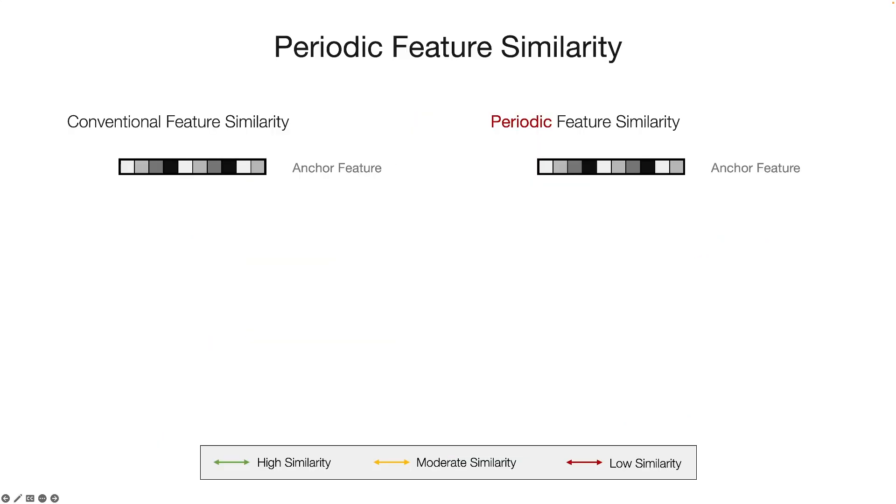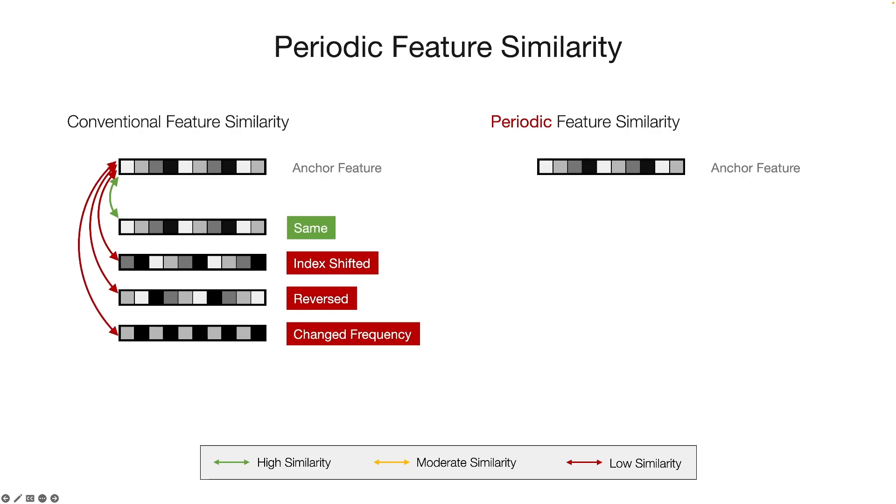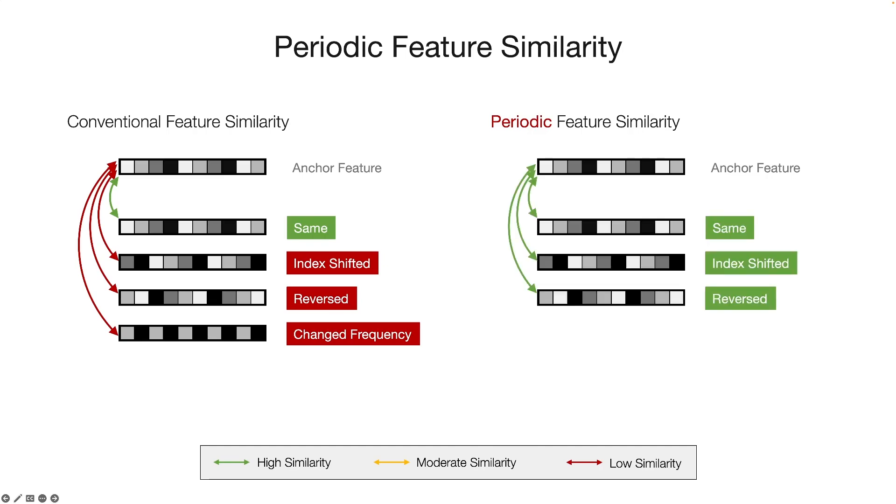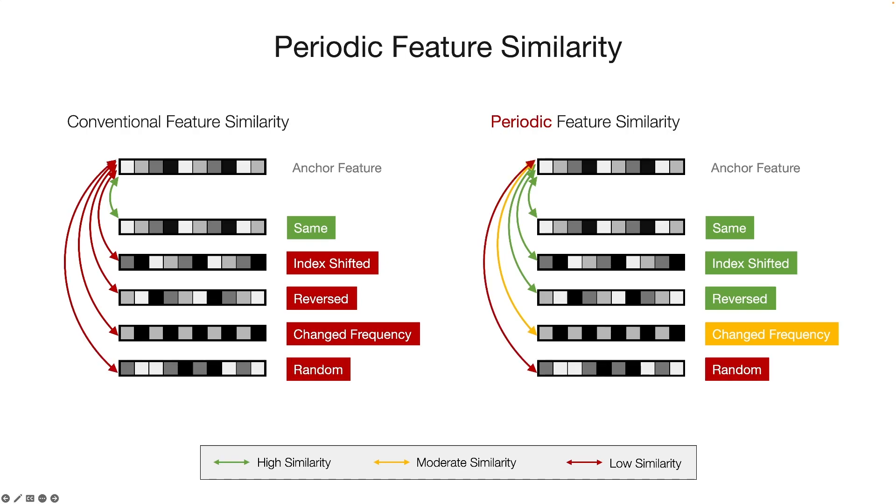Specifically, conventional similarity measures, such as cosine similarity, emphasize strict proximity between two feature vectors, and are sensitive to index shifted features, reversed features, and features with changed frequencies. In contrast, periodic feature similarity should also induce high proximity scores for features with shifted and sometimes reversed indexes, while capturing a continuous similarity change when the feature frequency varies. Note that both measures would exhibit low similarity for random features.